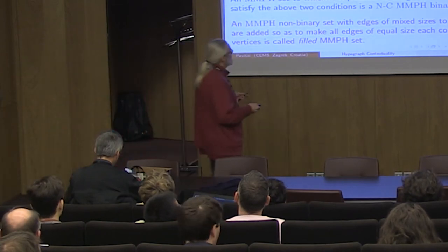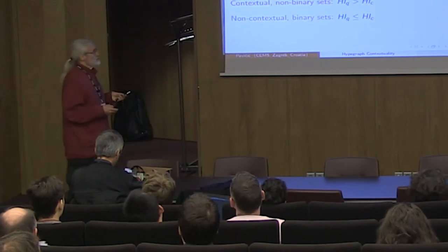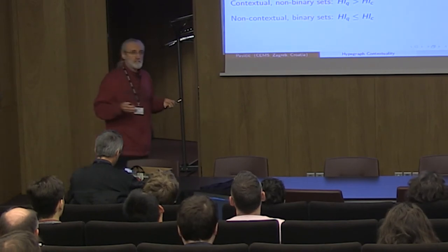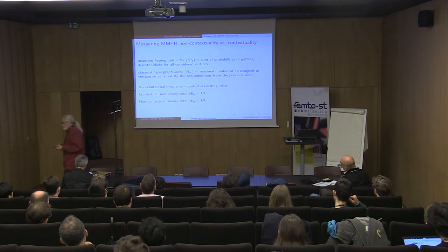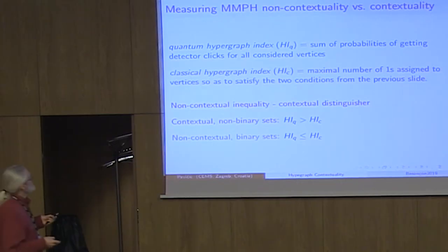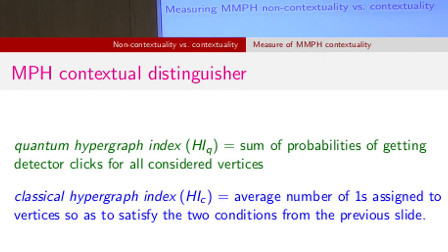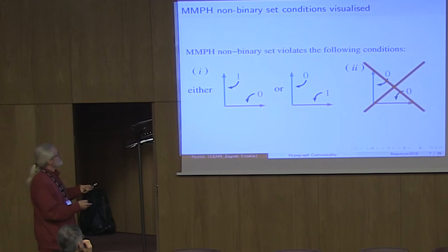When we have hypergraphs with truncated edges, we first have to fill such a hypergraph, that means add all the vertices that are missing, and find coordinatization for all of them, and then we can go back to our truncated hypergraphs. In order to make experiments and distinguish between contextual and non-contextual property, we introduce two indices: quantum hypergraph index, which is the sum of probabilities of getting detector clicks for all considered vertices, and the classical hypergraph index, which is the maximum number of ones assigned to vertices so as to satisfy the two conditions.